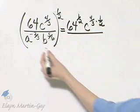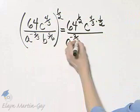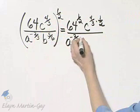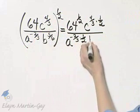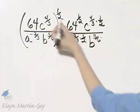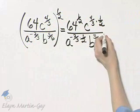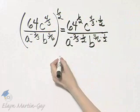In the denominator, that's a to the negative 2 thirds power raised to this power. So I will also multiply exponents. And then b to the 5 sixth power raised to the 1 half power. Again, that means I multiply exponents. So let's see what we have.